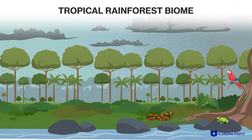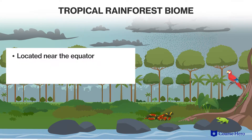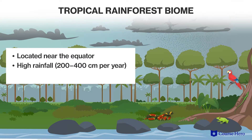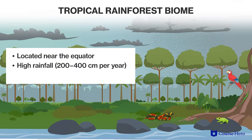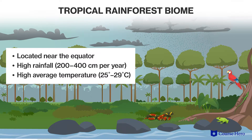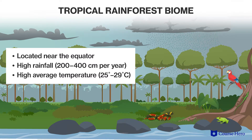Tropical rainforests occur near the equator and experience high rainfall ranging from 200 to 400 centimeters of rain a year, and high average temperatures ranging between 25 and 29 degrees Celsius.